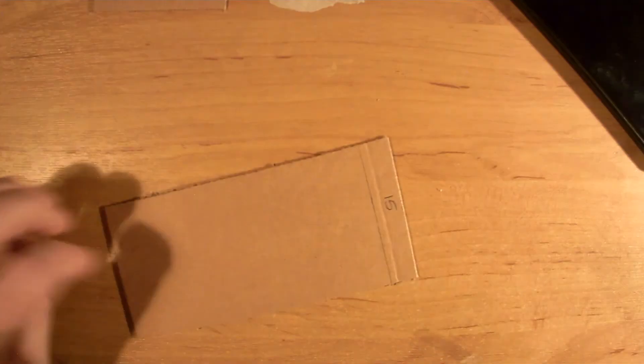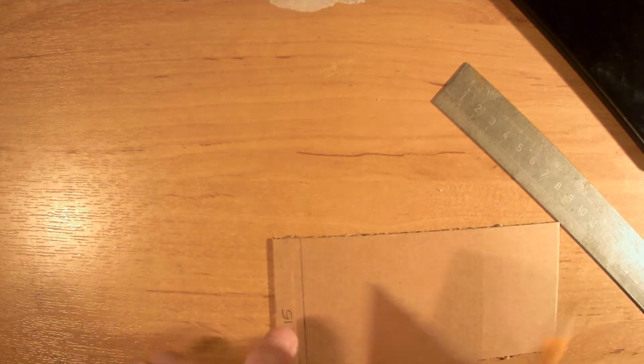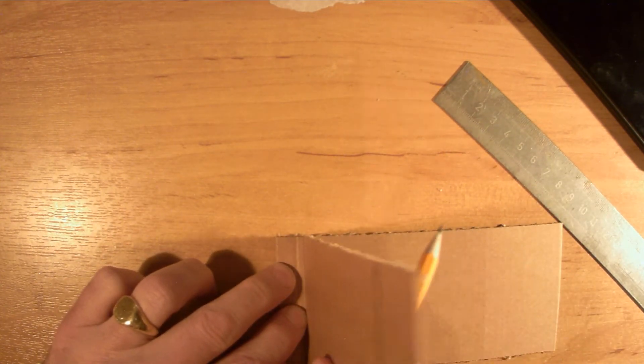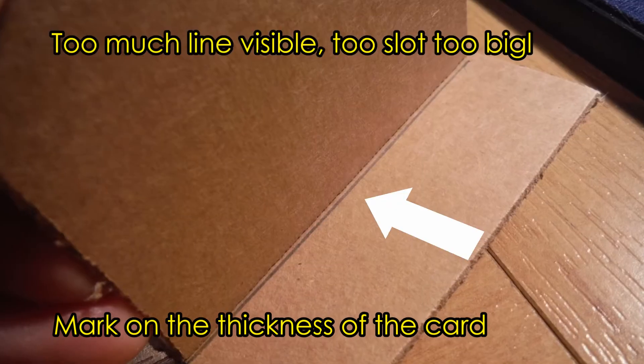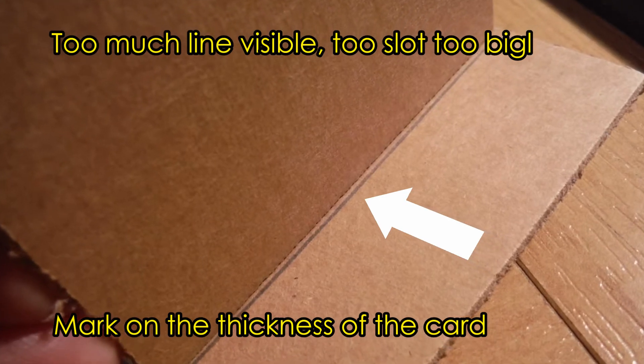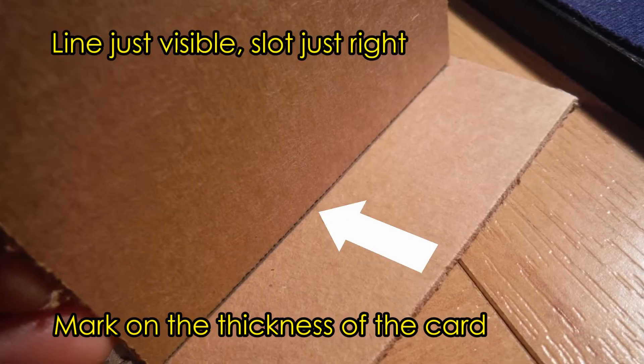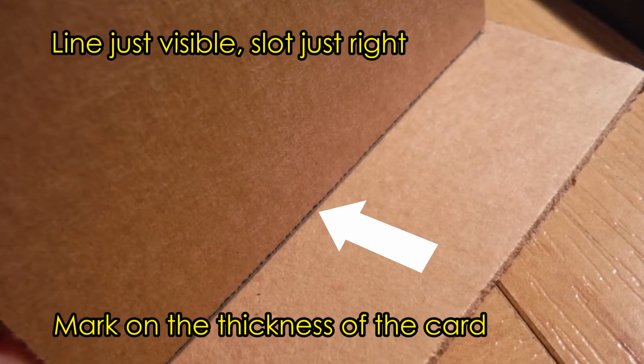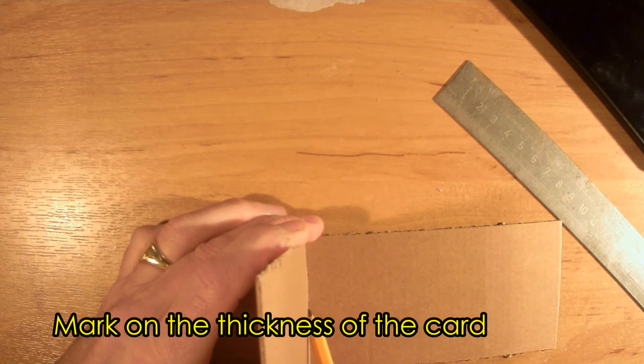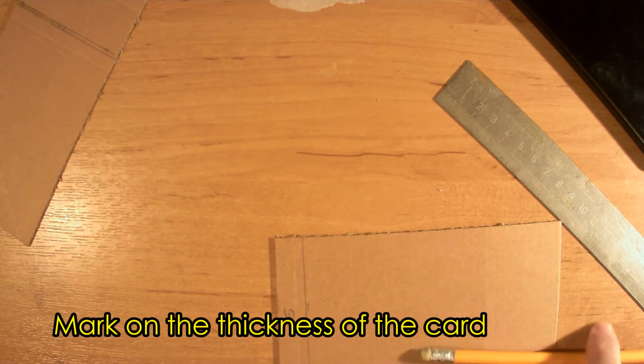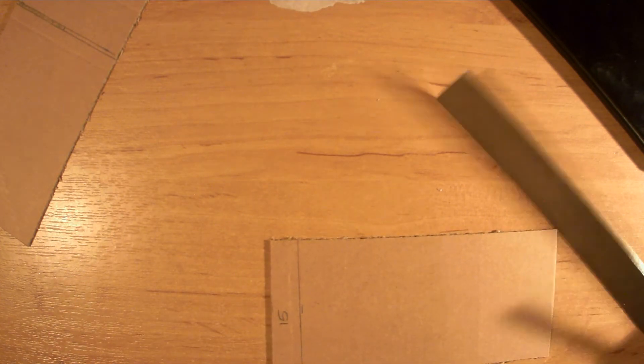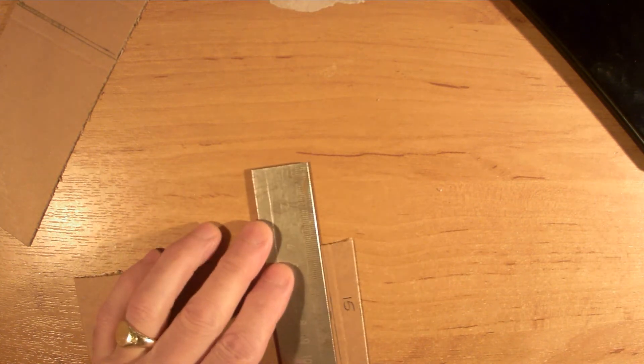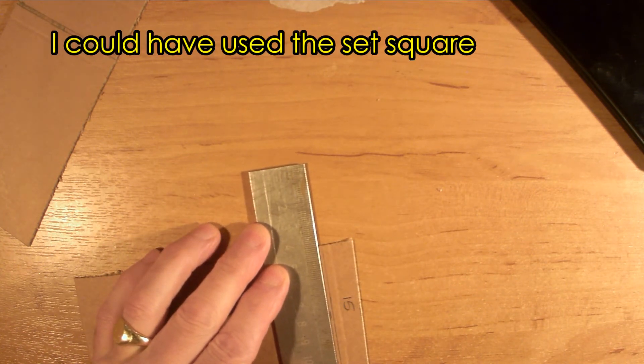If I do the same on my other piece of card, I can get the line just covered by the card and make a little line on the other side. So that's the thickness of my card. Now I want to keep those lines parallel, so I'm going to have to do it by eye, as I haven't got a tri-square.